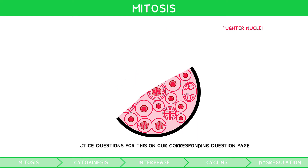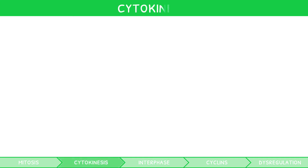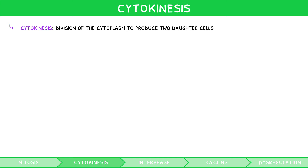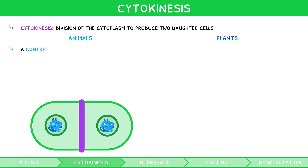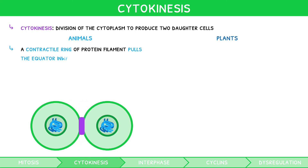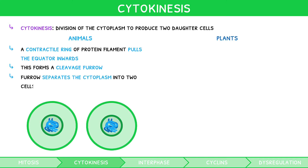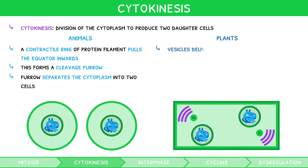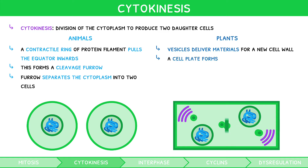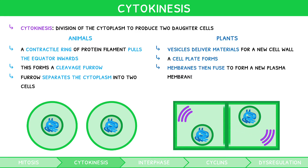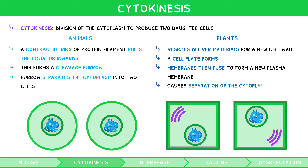Mitosis generates two genetically identical nuclei within the cell, but how does a cell actually divide? Cytokinesis is the division of the cytoplasm to produce two daughter cells, and it occurs slightly differently in animals and plants. In animals, a contractile ring of protein filament pulls the equator of the cell inwards, forming a cleavage furrow, which eventually separates the cytoplasm into two cells. In plants, Golgi vesicles deliver materials for a new cell wall to the equator. A cell plate forms, eventually joining the existing cell wall, and the vesicle membranes fuse to form a new plasma membrane, causing separation of the cytoplasm into two cells.